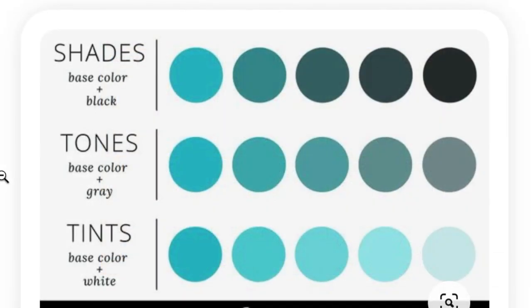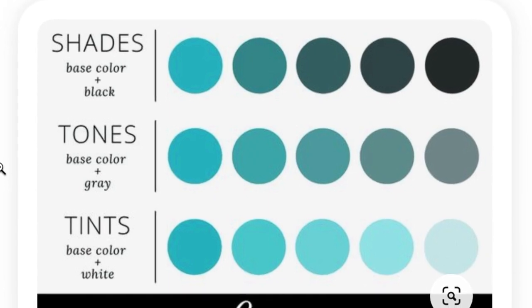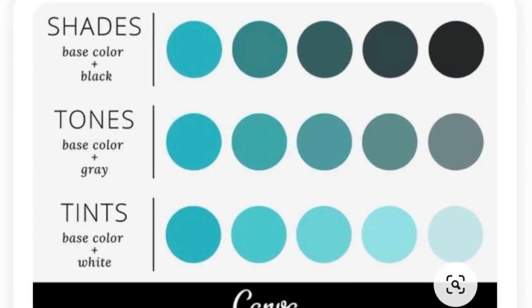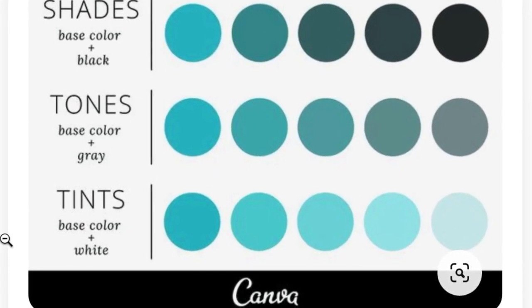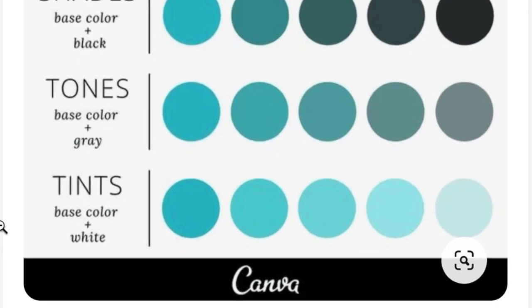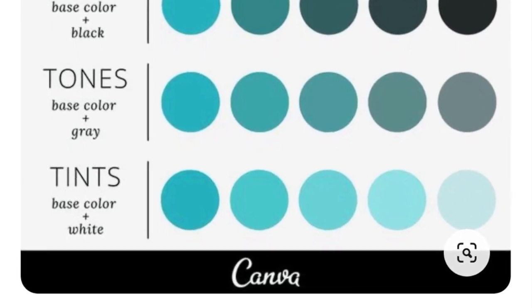When a color is a shade, it means it has black added to it. When it has gray added, it's a tone. And when it has white added to the color, it is a tint.